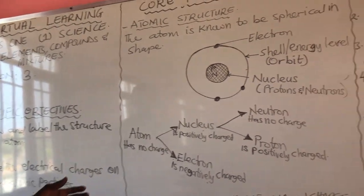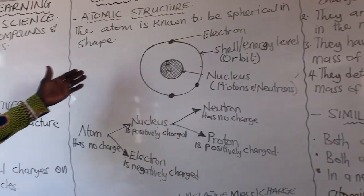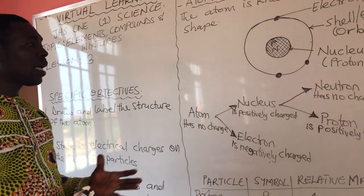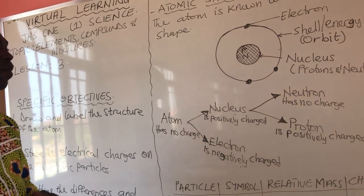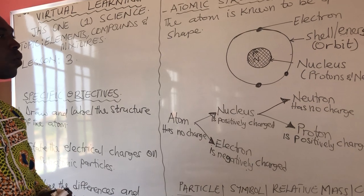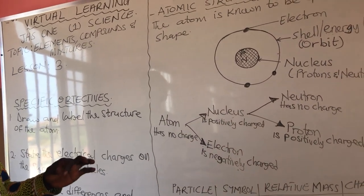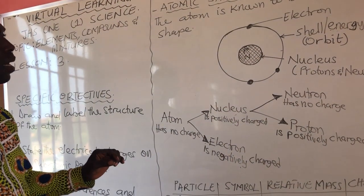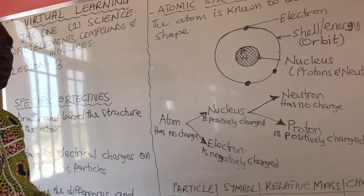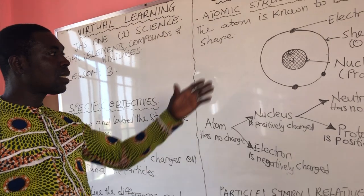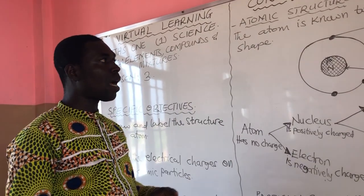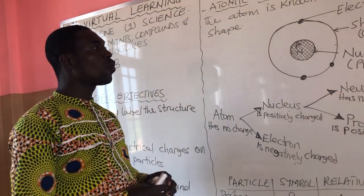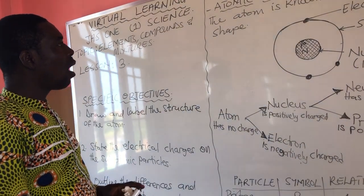We've talked about the atomic structure. When you are asked to draw the structure of any element, bear in mind that every element has its atomic number. We use the atomic number to indicate the electrons. Therefore, the number of electrons is the same as the atomic number, and that is what we use to represent on the structure.